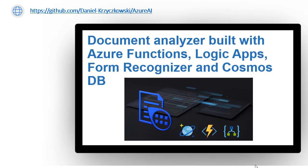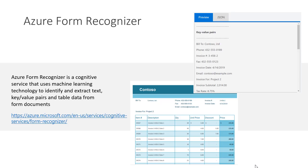I would like to present the solution I created — it's called Document Analyzer. Let me introduce the cognitive service I used, provided by Microsoft Azure Cloud. It's called Azure Form Recognizer. It's a cognitive service that uses machine learning technology to identify and extract text, key-value pairs, and table data from form documents. If I have a document with a specific structure like a table, I can extract specific data from specific parts of the document, and then process and insert that data into a database.